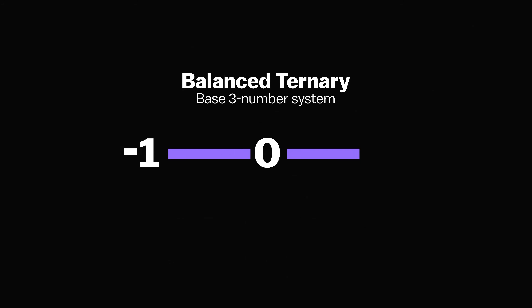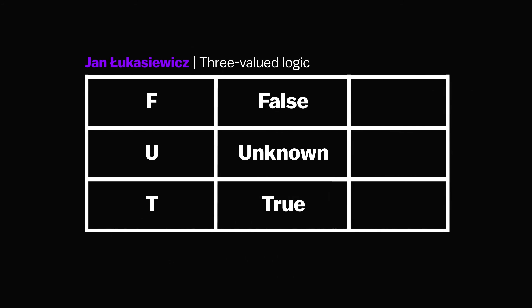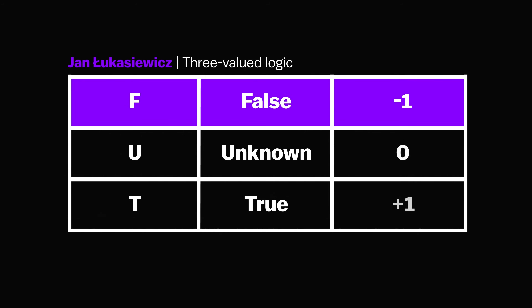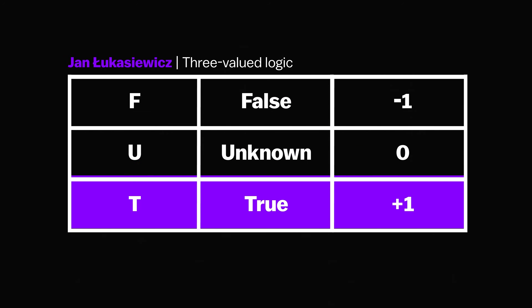Balanced ternary is a base-3 number system which uses the digits −1, 0, and +1. In this notation, −1 maps to false, 0 to unknown, and +1 to true. You'll see why this is useful in a moment.